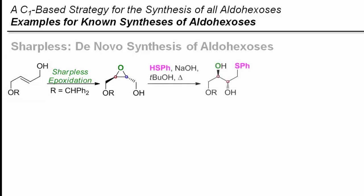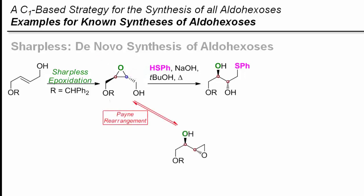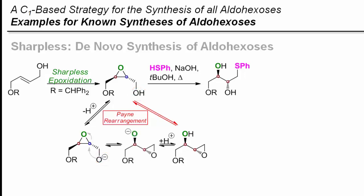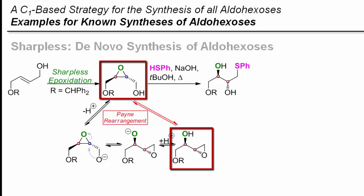The resulting epoxide is opened under basic conditions with thiophenolate. Looking at the product, you might ask yourself why the thiophenolate is not attacking one of the epoxide carbons. This is because of the so-called Payne rearrangement, which occurs under basic conditions. After deprotonation of the terminal hydroxyl group, an intramolecular SN2 reaction takes place, and this establishes a fast equilibrium between those two epoxides.